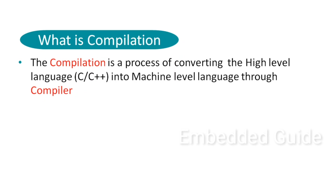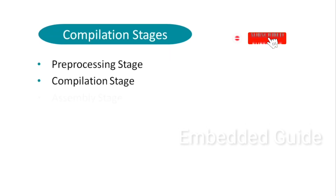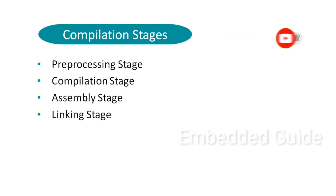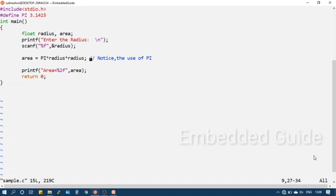Compilation consists of four stages: the pre-processing stage, compilation stage, assembly stage, and linking stage. Now let's take a sample program.